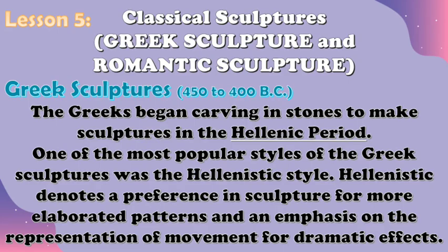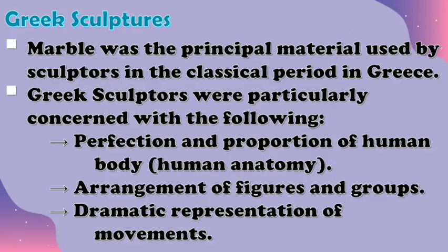Now let's move on to Lesson 5, about the classical sculptures, including the Greek and Roman sculpture. In the Greek sculptures during 450 to 400 BC, the Greeks began carving in stones in the Hellenic period. One of the most popular styles was the Hellenistic style, which denotes a preference for more elaborated patterns and an emphasis on the representation of movement for dramatic effects. Marble was the principal material used. Greek sculptors were particularly concerned with the perfection and proportion of the human body, the arrangement of figures and groups, and the dramatic representation of movements.